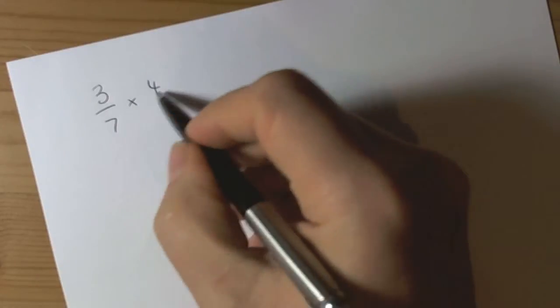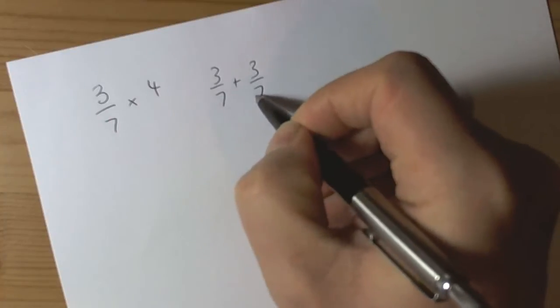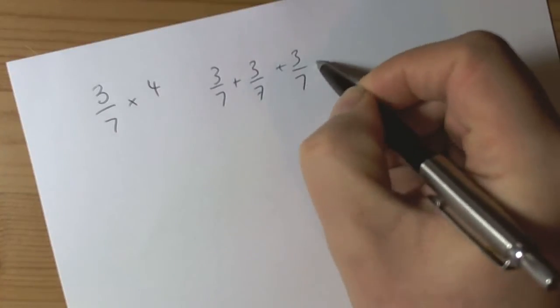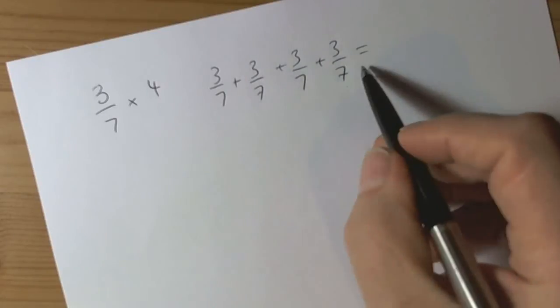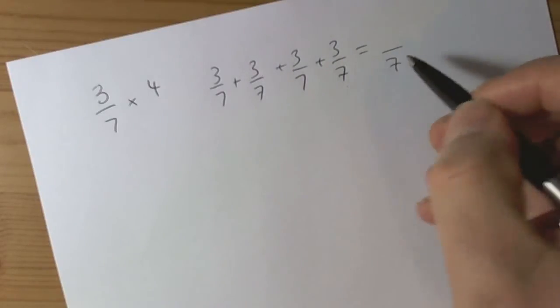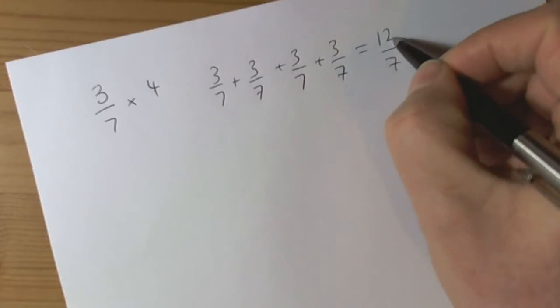And what we're going to realize here is this means we're doing 3 sevenths plus 3 sevenths plus 3 sevenths. And when we're adding fractions, we've got a common denominator. So our answer will be in sevenths. And we've got 3, 6, 9, 12. So we've got 12 sevenths.